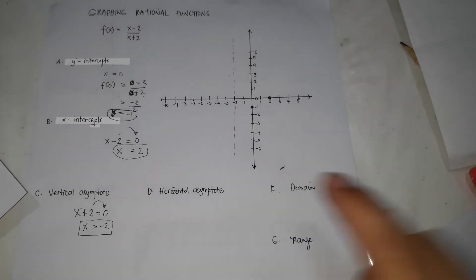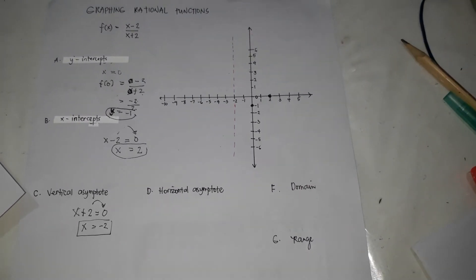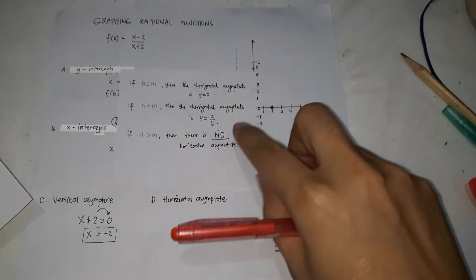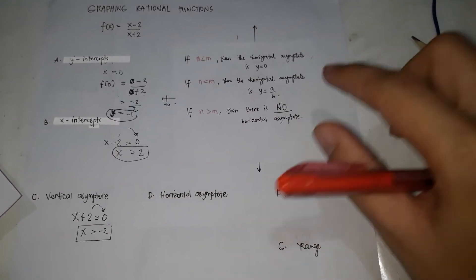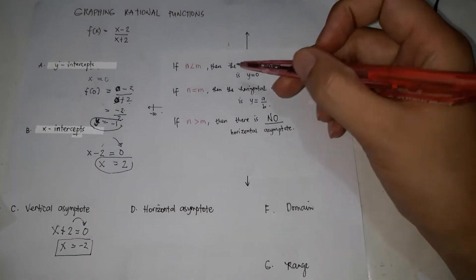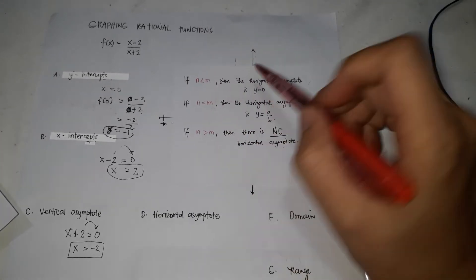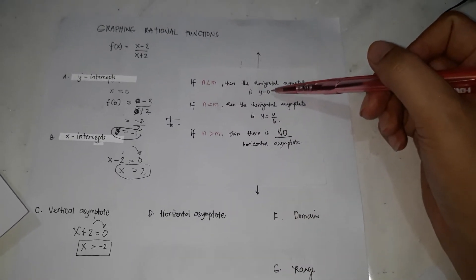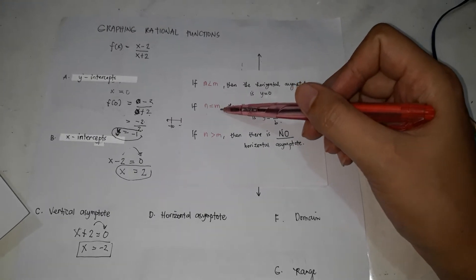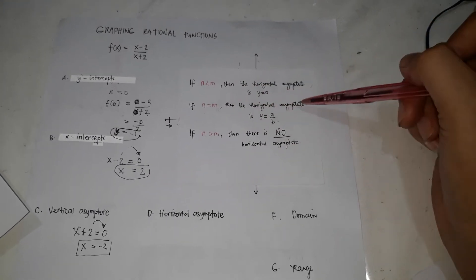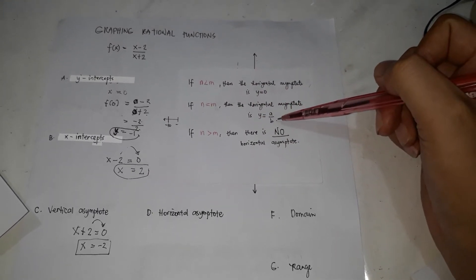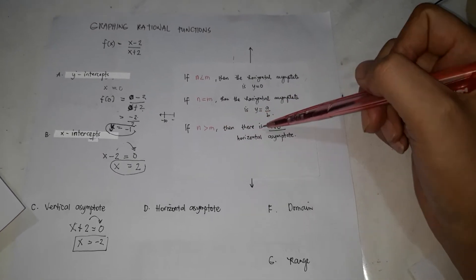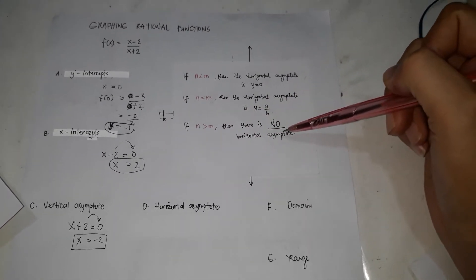The horizontal asymptote requires a rule. The rule is: if n is less than m, then the horizontal asymptote is y equals 0. If n equals m, then the horizontal asymptote is y equals a over b. If n is greater than m, then there is no horizontal asymptote. Here, n is the degree of the numerator and m is the degree of the denominator.